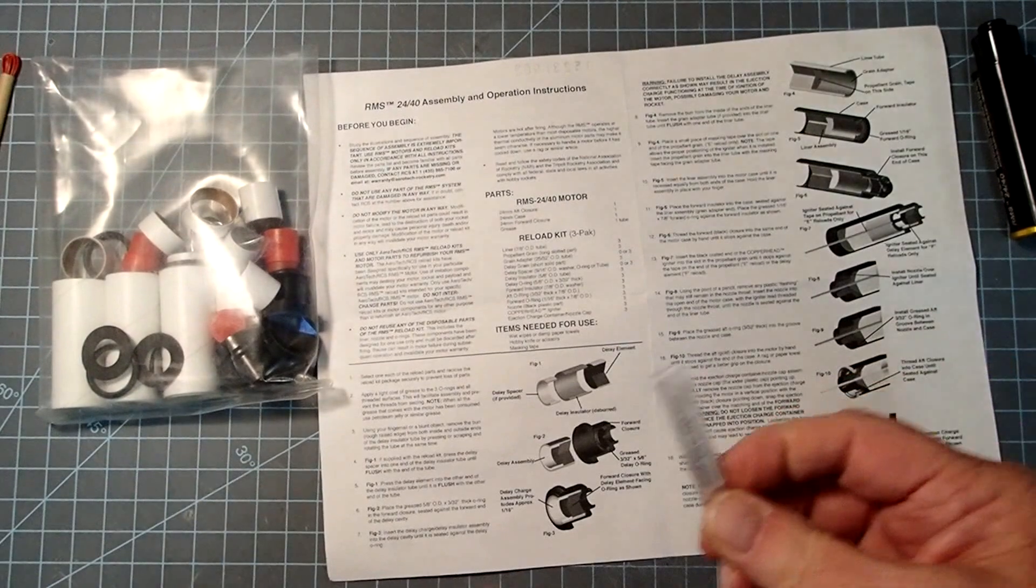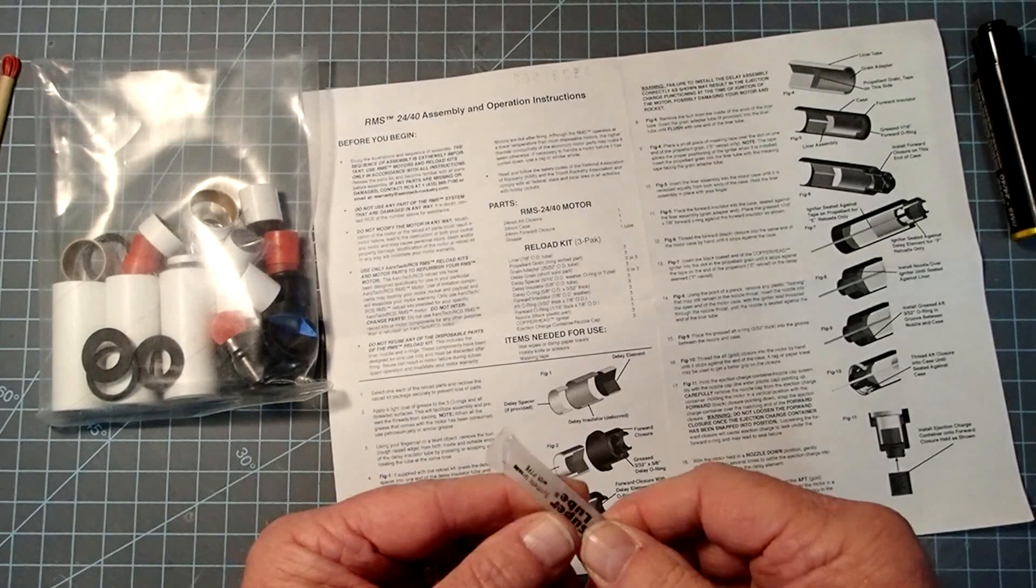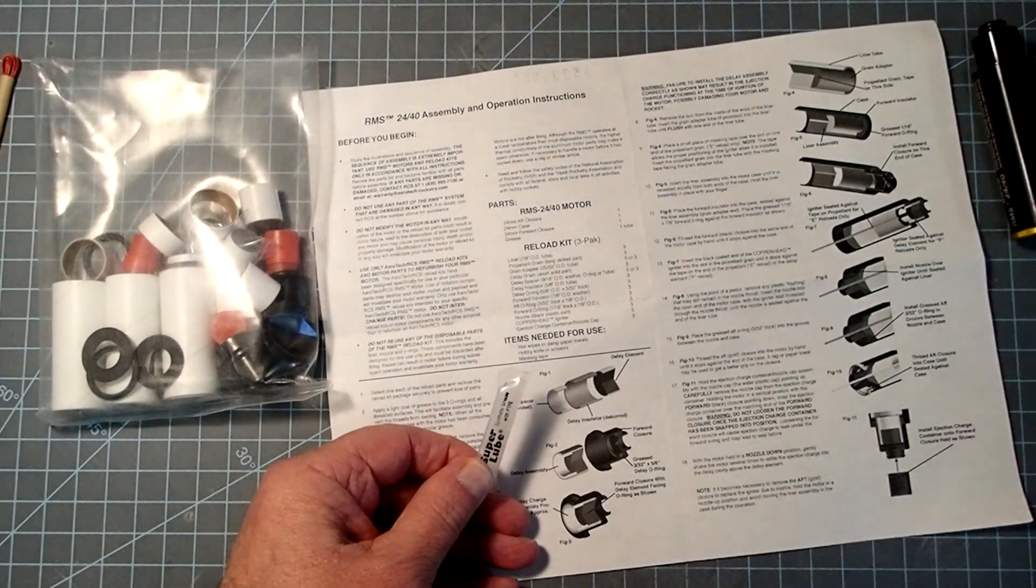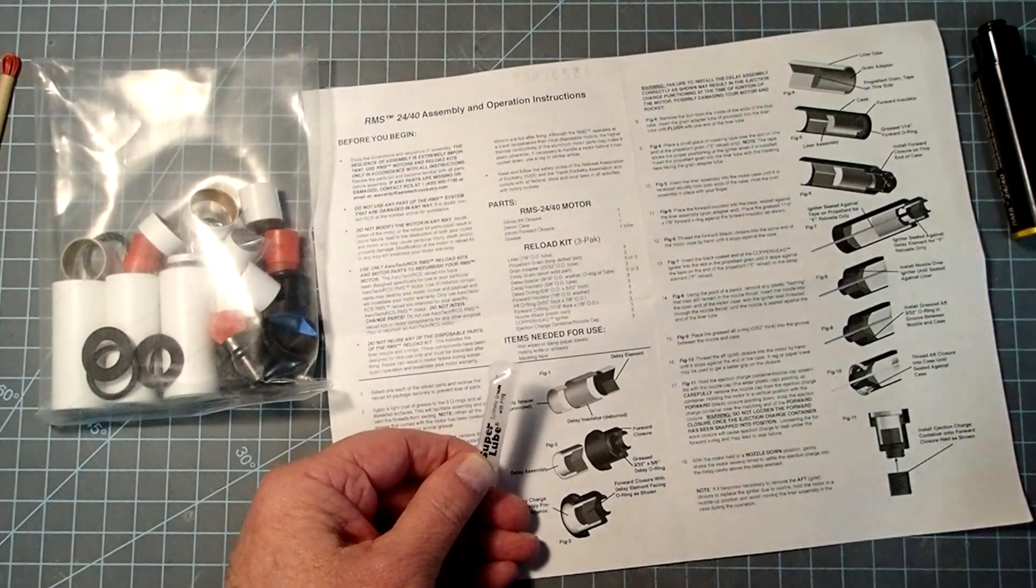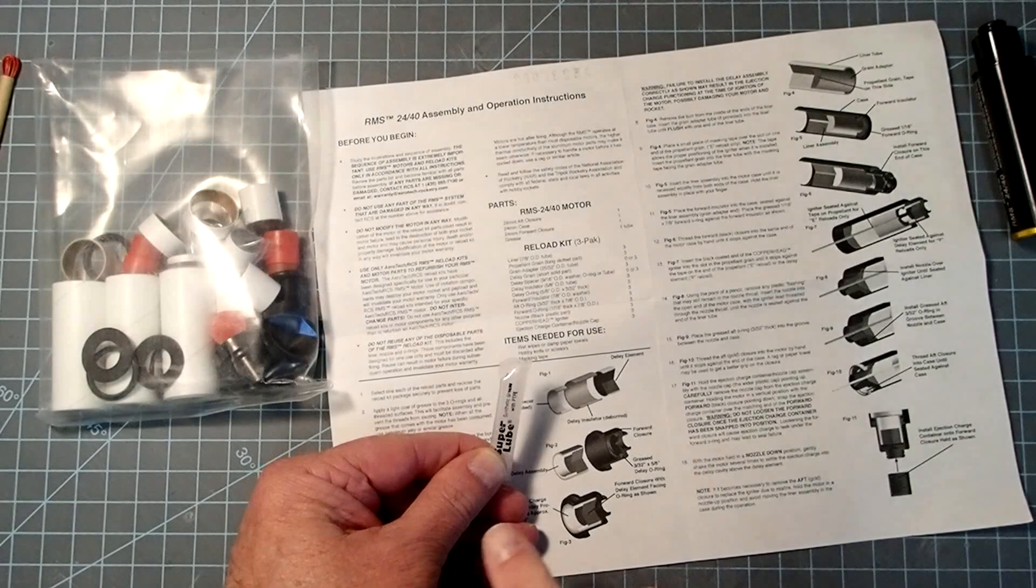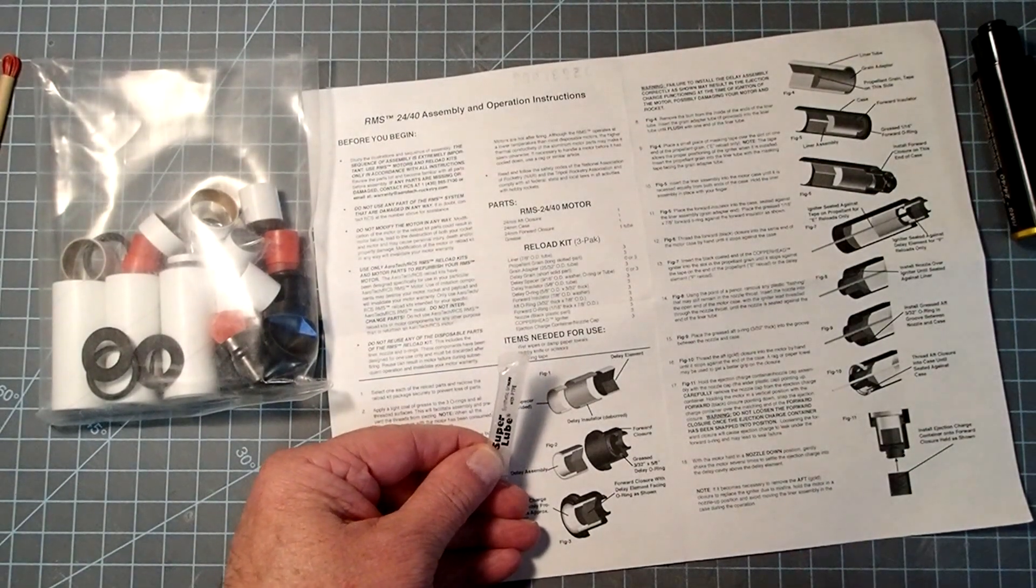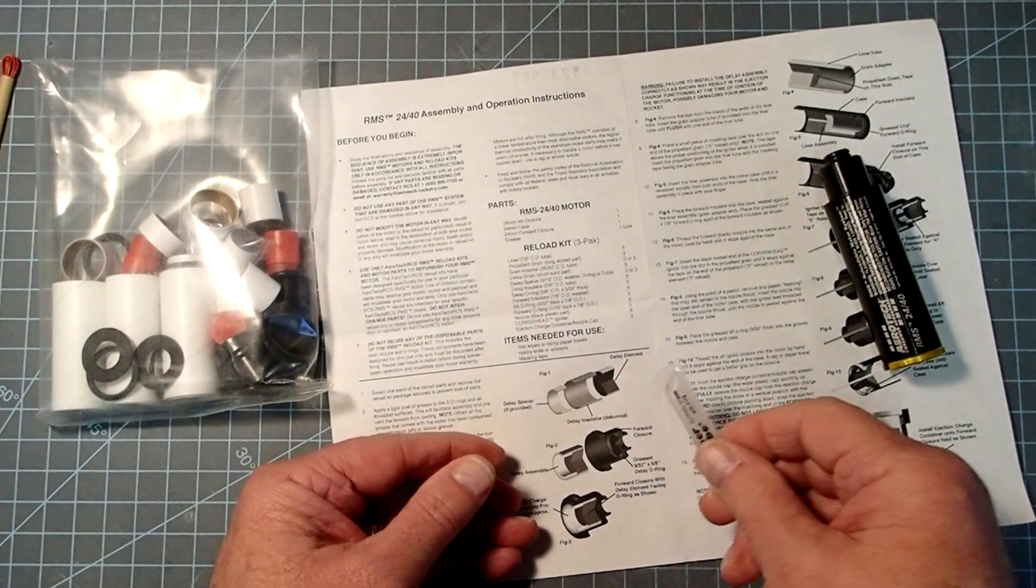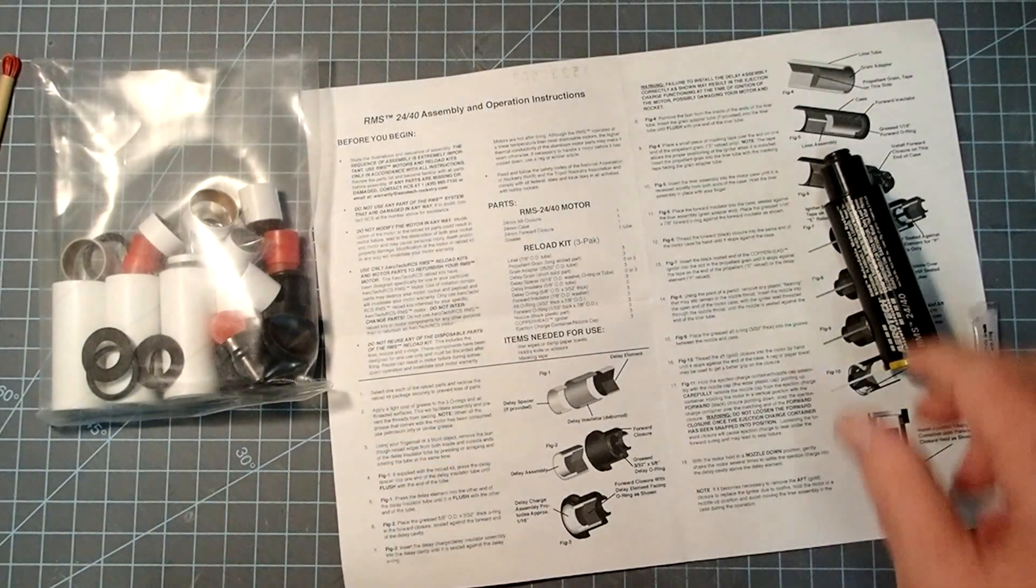One thing you will need that is not included with the reload kit is a little bit of silicone grease. I use Super Lube. This can be found in automotive stores in the electrical part where it's used as a dielectric grease for trailer hookups and things like that. As I recall, my motor case here actually came with a small tube of this, but not all of them do. We will need that.